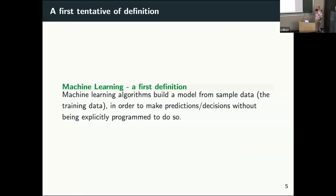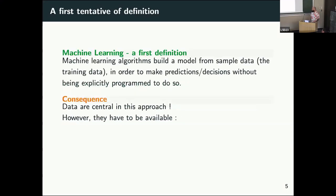Let's try to give a first definition. With a machine learning algorithm, we're trying to build a model from sample data — what we call the training data — and we want to make predictions without having to program the behavior. We want to learn from the examples, learn from the data, the model that we'll be able to use later on data that has not been seen.